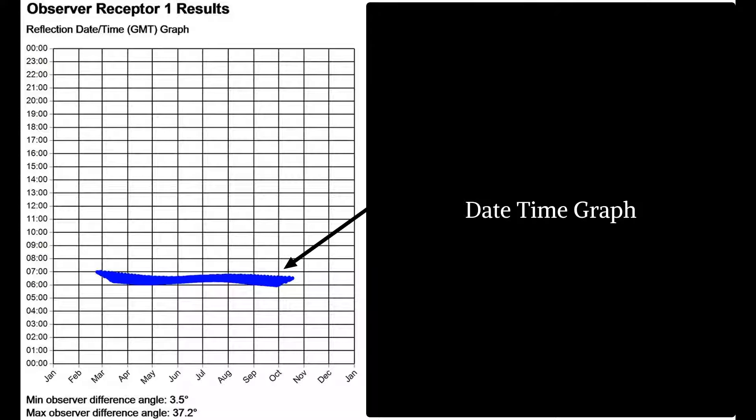In this instance, glint and glare effects could occur on a clear sunny day between late February and mid-October. On any one day, the maximum duration for glint and glare effects would be approximately one hour.